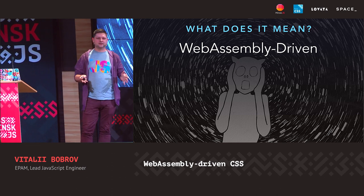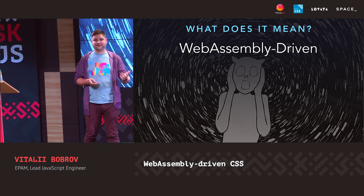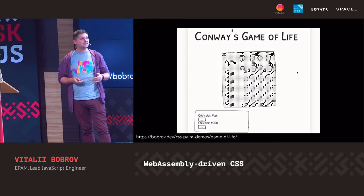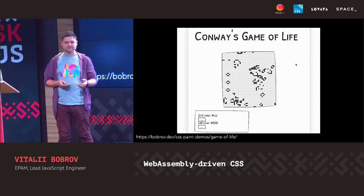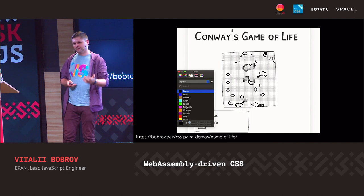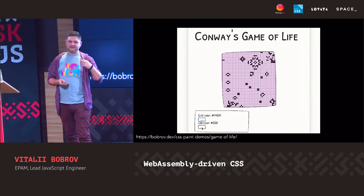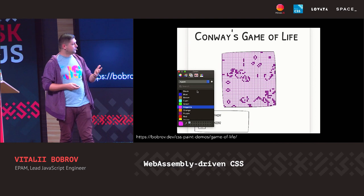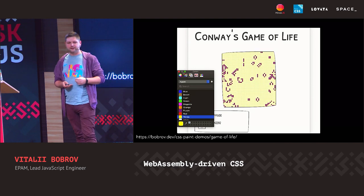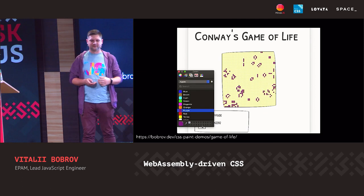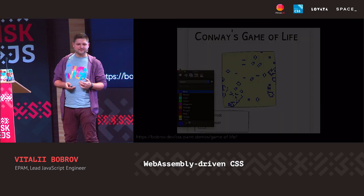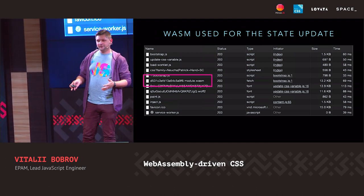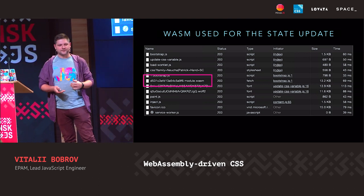So what actually does it mean, WebAssembly-driven CSS? What is the concept behind it? Here's a demo — it's Conway's Game of Life. It's rendered using Houdini CSS Paint API, and the state of this animation is driven by WebAssembly. I'm using custom properties to update grid colors and pass data to the renderer, and it's alive. Here you can see I'm loading a WebAssembly module, and it updates the state of the animation.